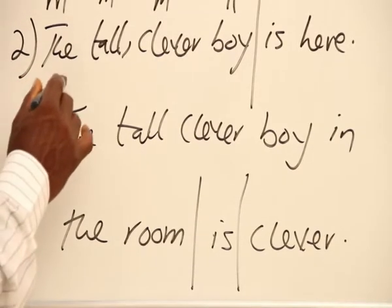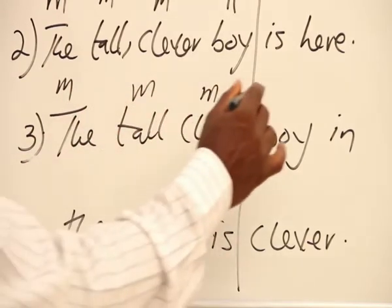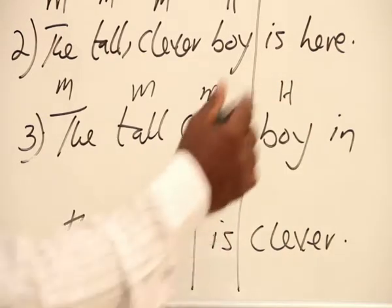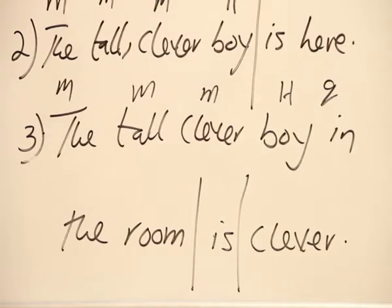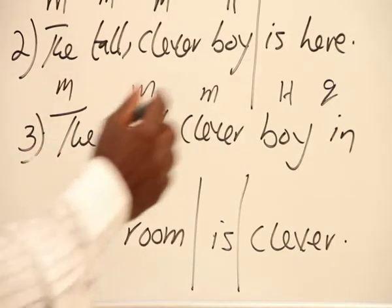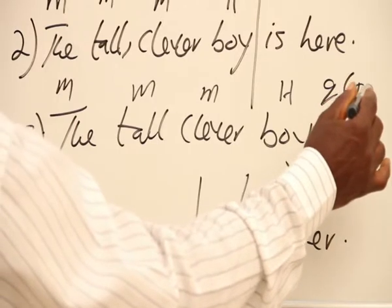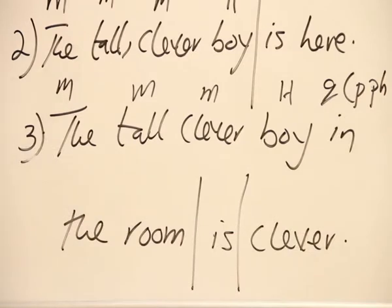In this case, we have M, M, M. Then we have an H. Then, after the H, we have what we call a postmodifier or a qualifier. The postmodifier is actually the same thing as qualifier. While the premodifiers are simply called modifiers. So the qualifier this time is a prepositional phrase, a prepositional phrase. That is what it is.